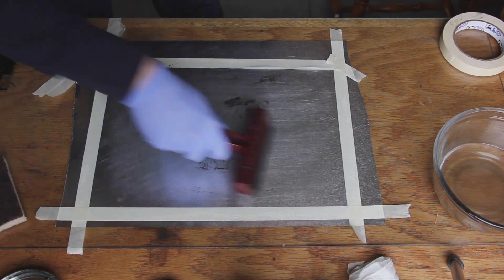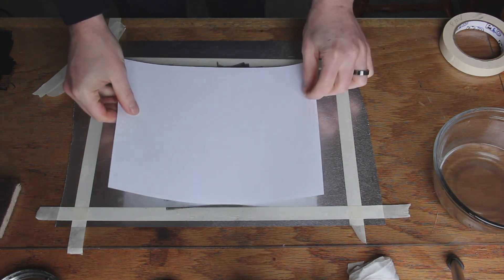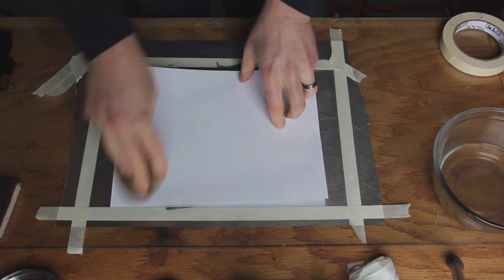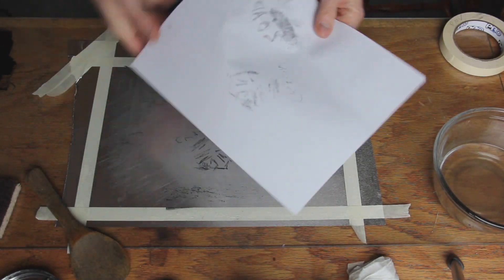Now I'm going to put a piece of paper down. This is just heavier office paper and I'm using a fair amount of force with my wooden spoon, peeling it up, seeing what happened and I got an image but it's really light.